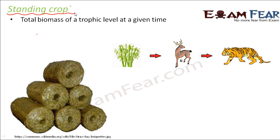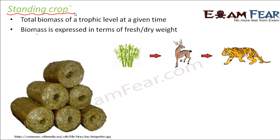The significance of standing crop is that when we talk about the flow of energy from one trophic level to another, we also talk about the flow of biomass. The amount of biomass changes as the trophic level changes, and the biomass remaining at one particular trophic level is called standing crop. Biomass is expressed in terms of fresh or dry weight, but dry weight is more accurate because there is no water involved.